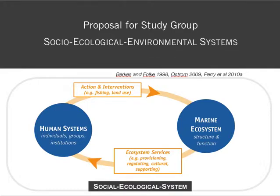This is a diagram of a social ecological system. This framework has been developed to explore the interaction dynamics between the human and natural systems. In this diagram we have the human system and the marine ecosystem — its structures and functions — and these orange arrows represent the interaction dynamics between these subsystems.